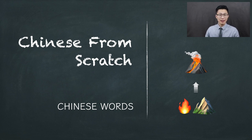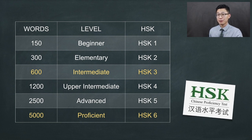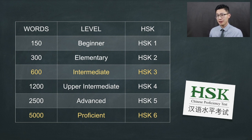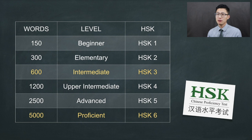Now before we jump into it, let's take a look at how many words we need to learn in Mandarin. Based on the HSK Chinese proficiency test, to hold a basic conversation, you will probably need to know about 600 different words. However, if you want to reach a higher level, you will need to know about 5000 words. Wow, 5000! That sounds a lot! Well, it's actually not if you know how to build the words from characters.